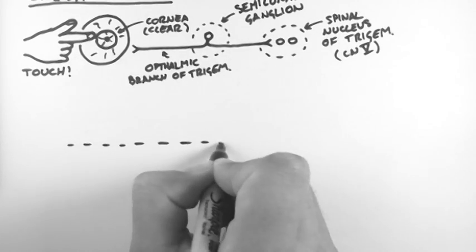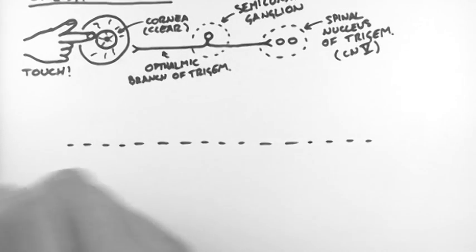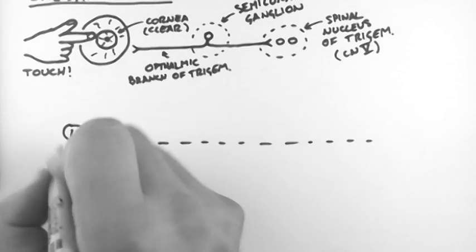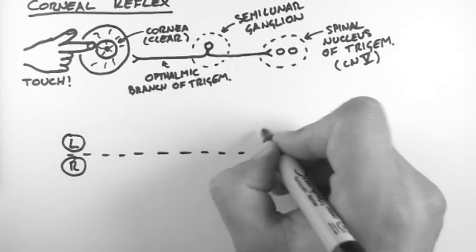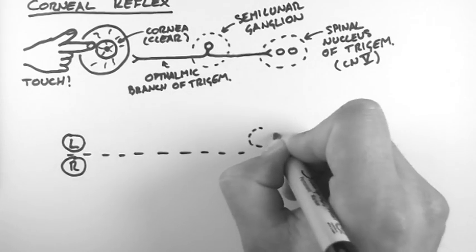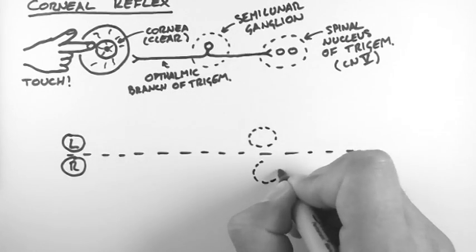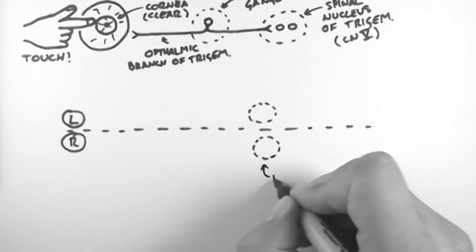Now this nucleus runs all the way up and down the brainstem. And now this is where it gets a bit more complicated because we have to consider the left and right side of the brain. Now there are two nuclei, one on each side of the brainstem, and these are the facial motor nuclei.